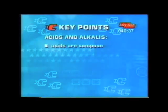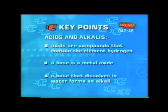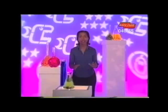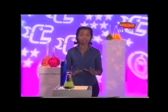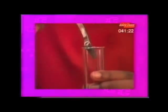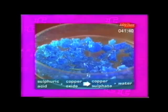For your test, you should know that acids are compounds that contain the element hydrogen, and a base is a metal oxide. When a base dissolves in water, it forms an alkali. Acids take part in some important chemical reactions. We saw earlier the reactions of acids and metals — these reactions can be summarised in the word equation: metal plus acid makes metal salt plus hydrogen. Dilute sulphuric acid is added to the metal base copper oxide, which produces water and the dissolved salt. Once filtered, the water in the blue solution can be evaporated away to leave blue crystals of the salt copper sulphate. So: sulphuric acid with copper oxide makes copper sulphate plus water.